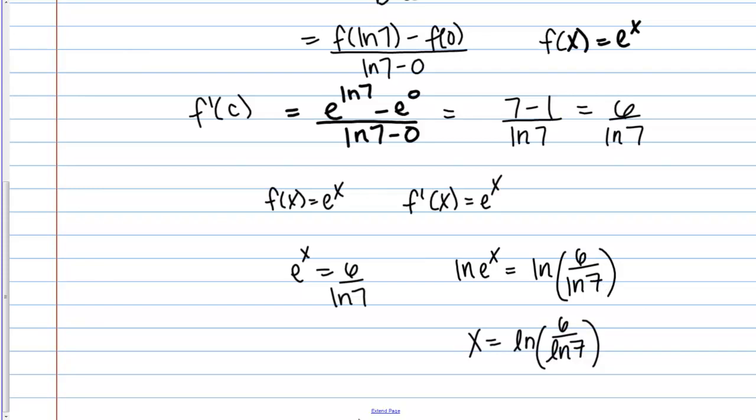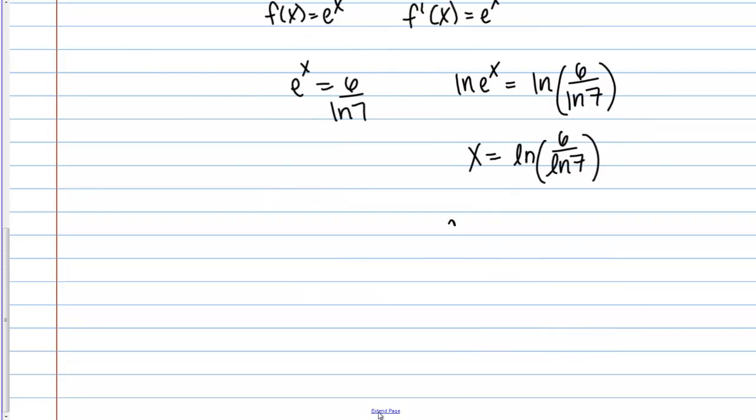If you like we can just go ahead and call this C. This is the C guaranteed by the mean value theorem. And this is the X value at which the slope of the secant line between X equals 0 and X equals ln 7 equals the slope of the tangent line.